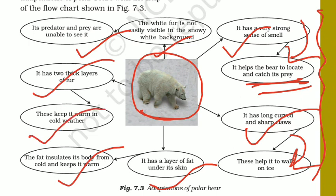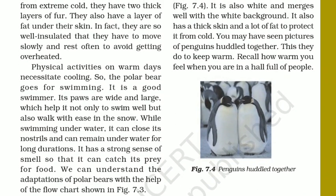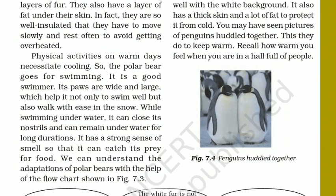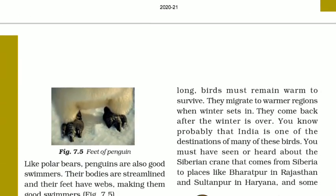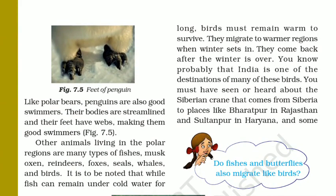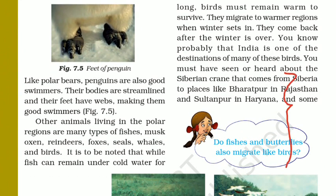With this flowchart you can easily understand how the polar bear can survive in such harsh conditions. Similarly, penguins also have that double-layered fur which protects them from the extremely harsh conditions. When we talk about swimming — as you have heard, for almost six months the sun rises, so obviously the temperature rises. To keep themselves cool, they swim, and they are very good swimmers.